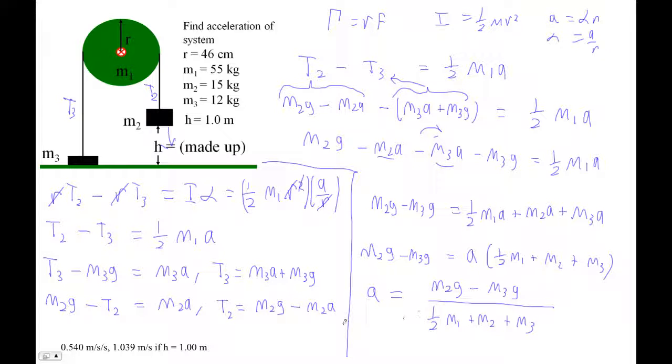Now, obviously, we can plug numbers into this. So I'm going to plug in numbers. So I'm going to go M2 is 15. So I'm going to go parentheses 15 times 9.81 minus 12 times 9.81, end parentheses. So I did the numerator in parentheses. Divided by parentheses, 0.5 M1. M1 is 55. So 0.5 times 55, plus 15 plus 12, end parentheses for the denominator. And I get exactly, somewhat strangely, 0.54 meters per second squared.